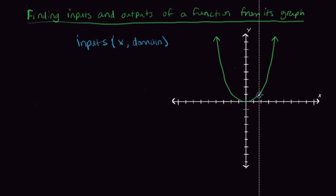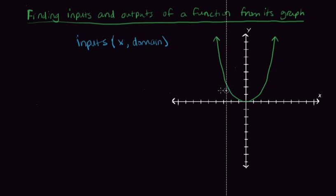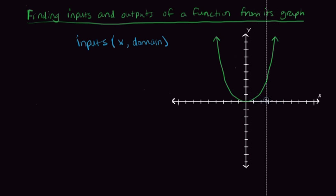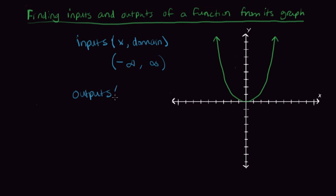No matter where we start, we're going on forever in both directions. Horizontally, we're going all the way along the x-axis. There are values everywhere — at zero, positive values, negative values — and there's never a place where anything stops. So in this case, the input is all real numbers, or everything from negative infinity to positive infinity.